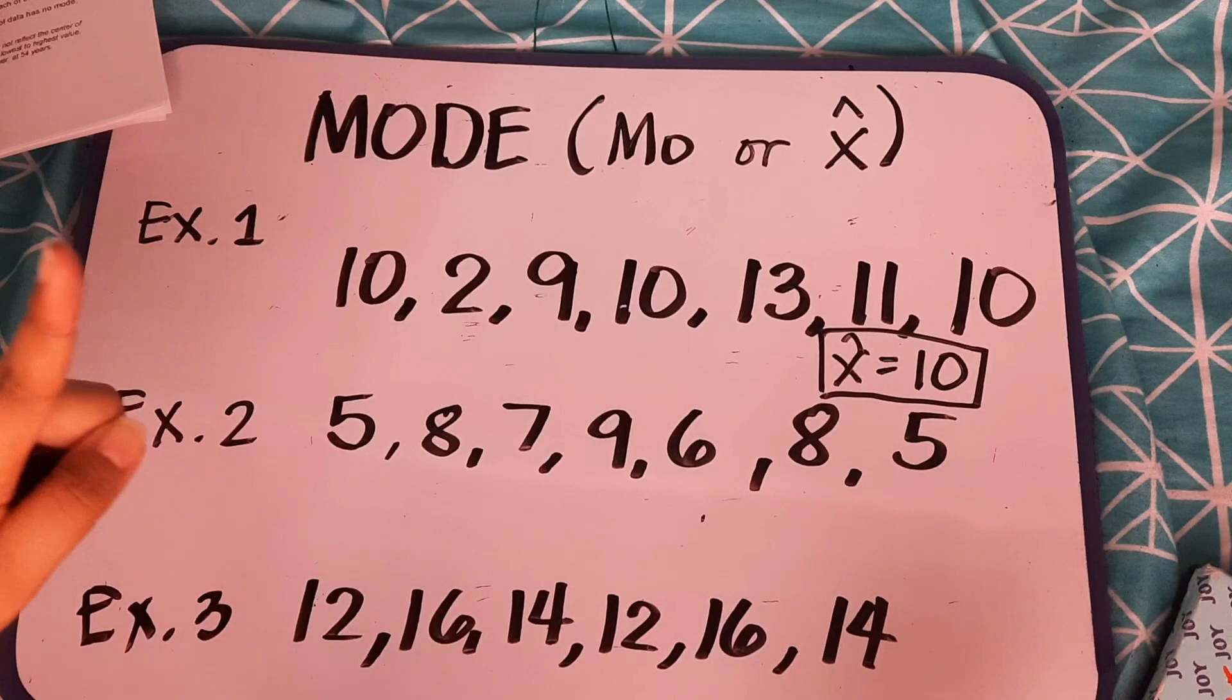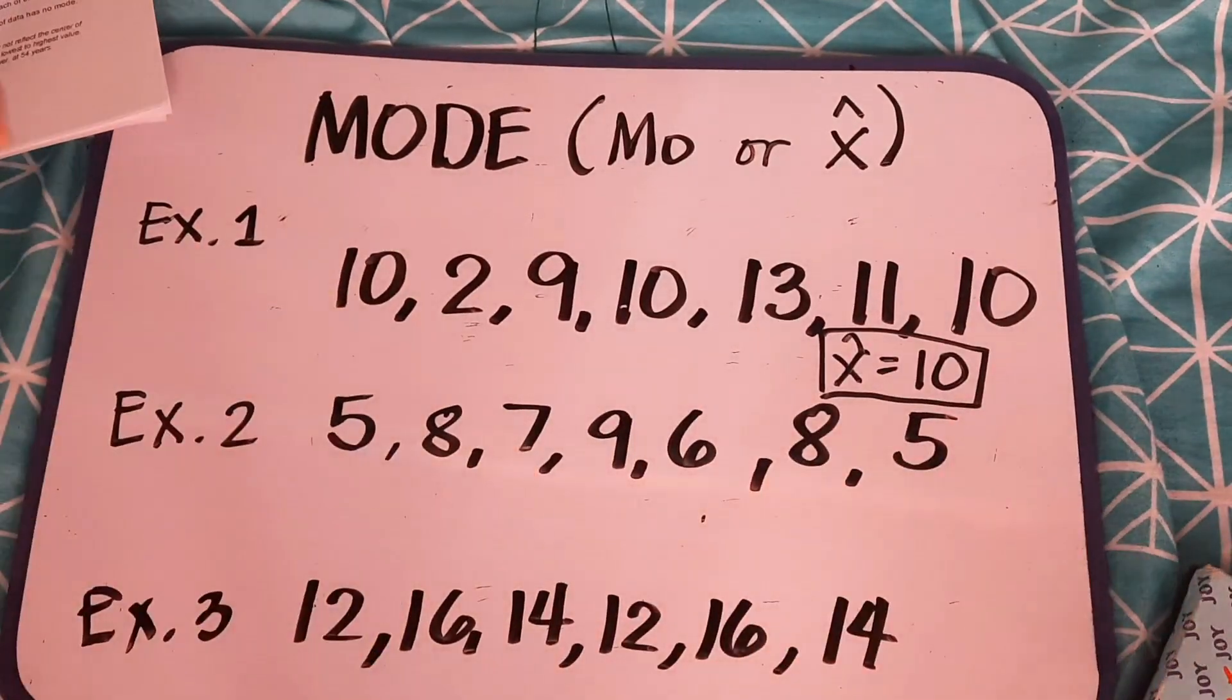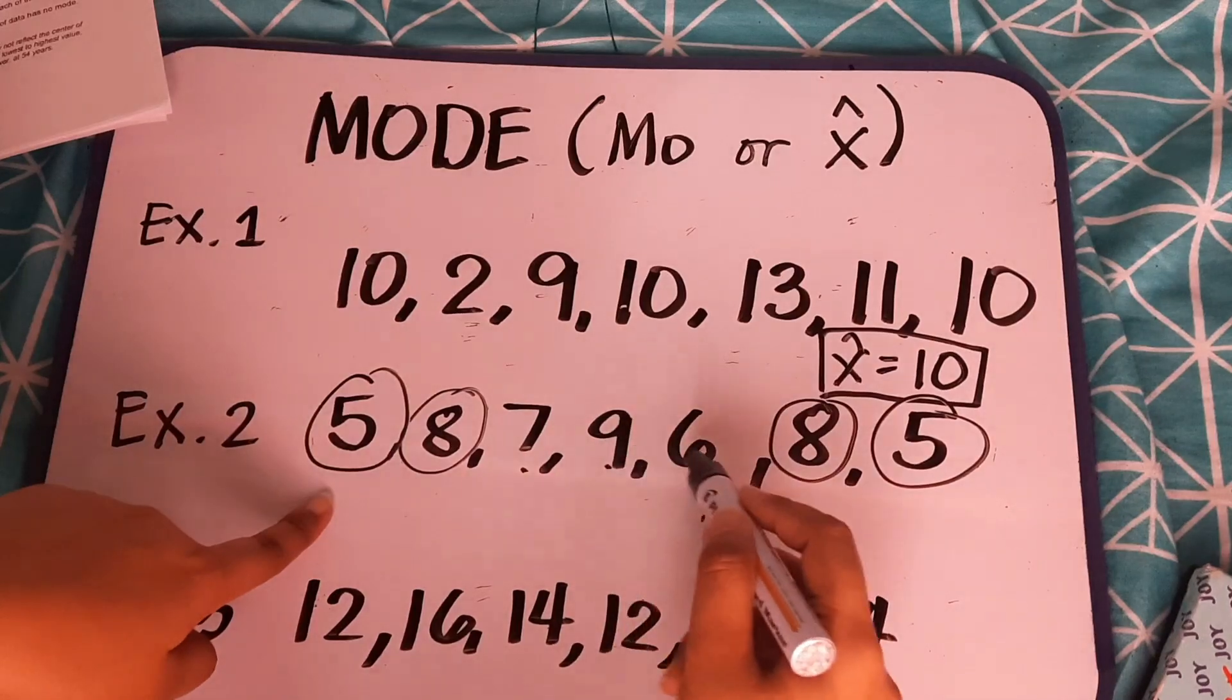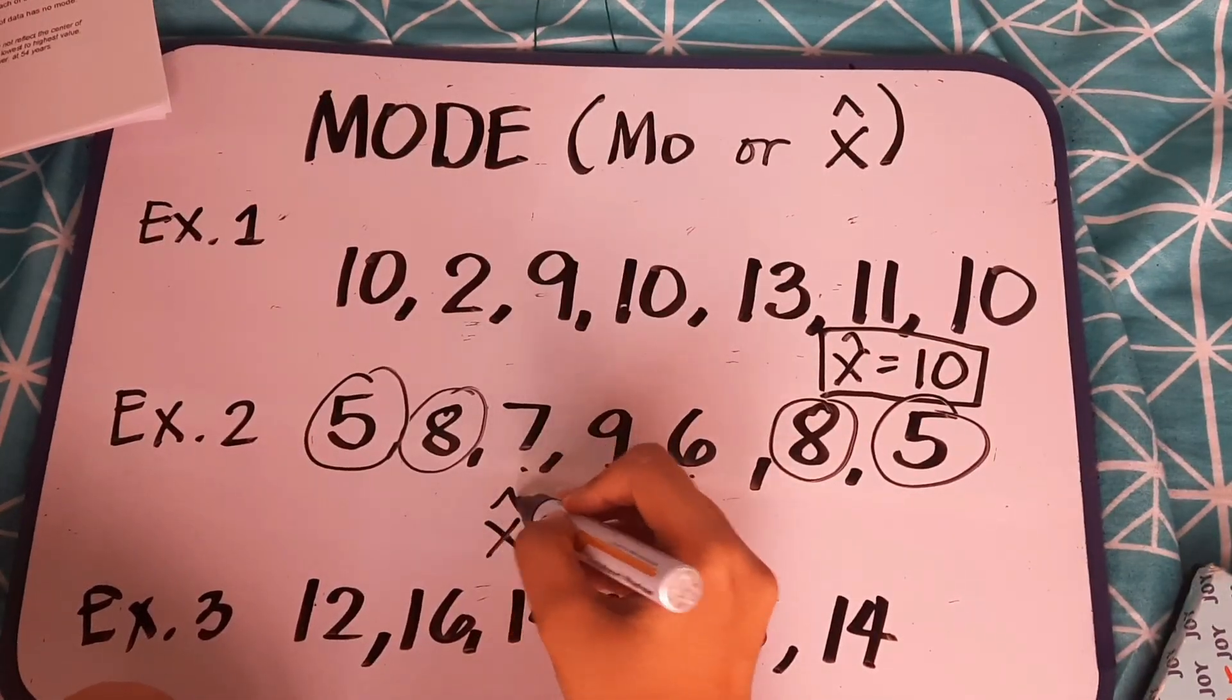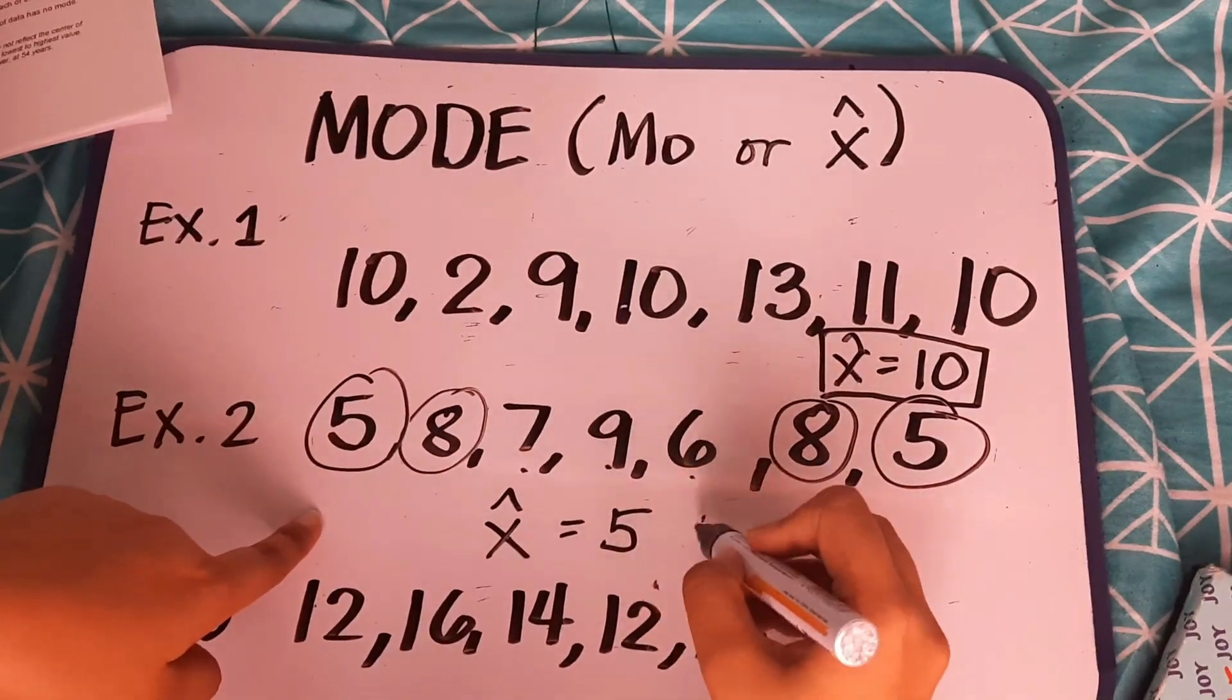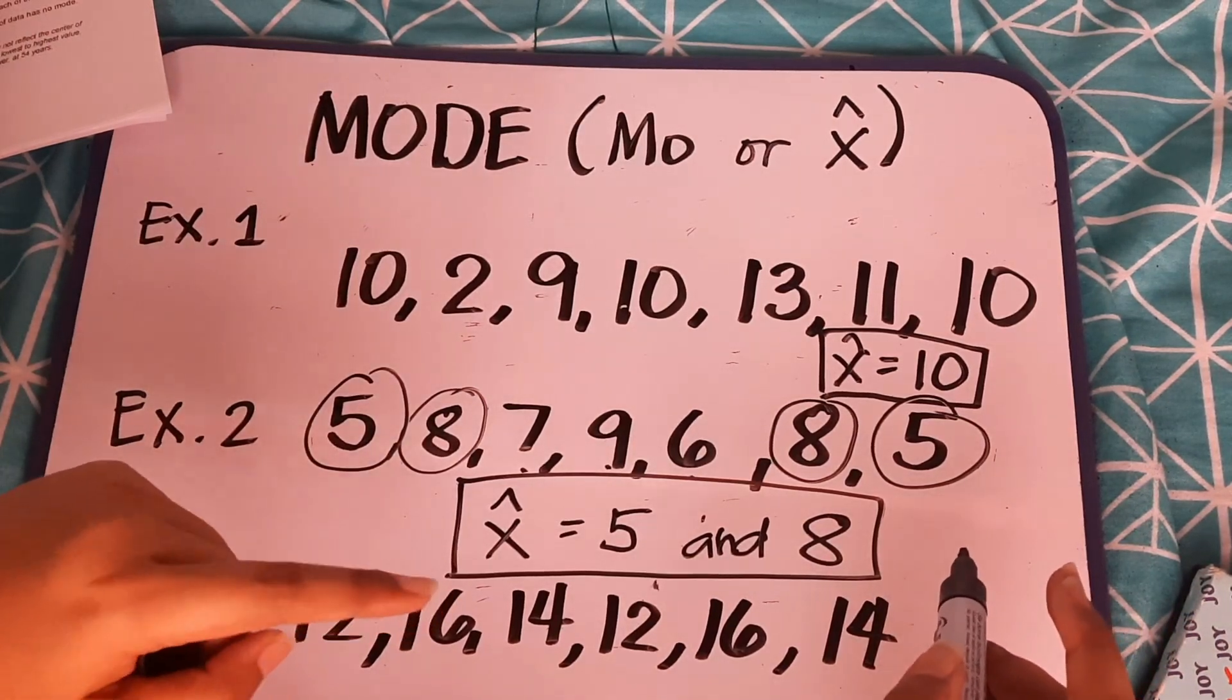At yun ang tinatawag na rule number 1 na select the measure that appears most often in the set. Number 2: 5, 8, 7, 9, 6, 8, 5. Alin dyan yung pinakamadaming nag-appear ng maraming beses? Yung 8 ay dalawang beses. Yung 5, dalawang beses din. Yung 7, 9, and 6, isang beses lang. Ano ang mode natin? Ang magiging mode natin ay, since parehas silang nag-appear ng madami, ibig sabihin, each of these values is a mode. So, ang mode natin is 5 and 8.